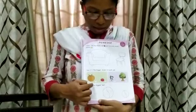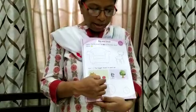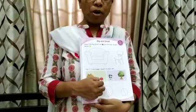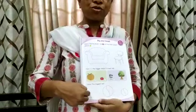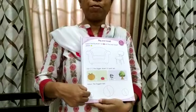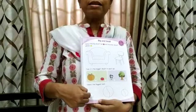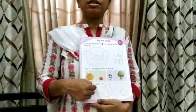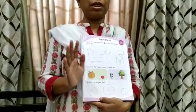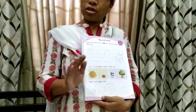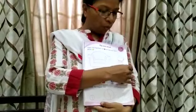Now, colour the biggest ball. Among all three balls, which one is the biggest? You will colour only that one — you will not colour the rest of the two. Now we move to page number 2.